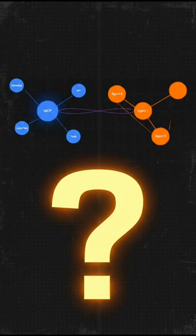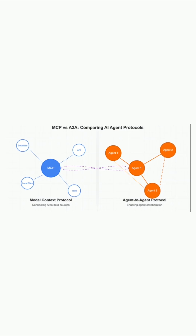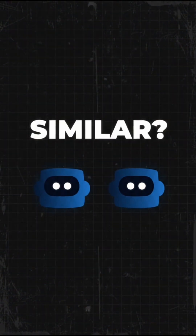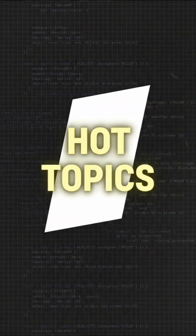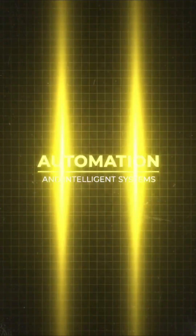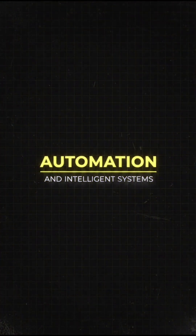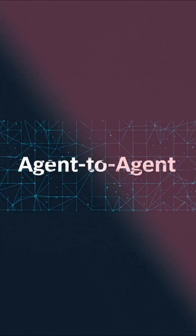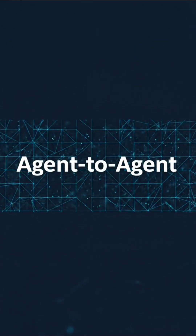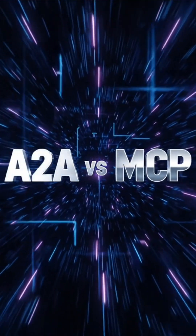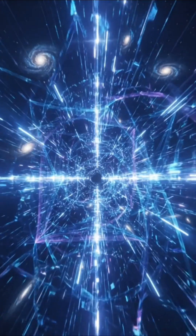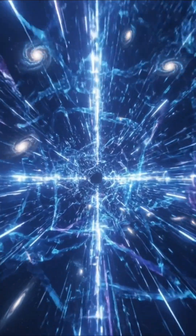Have you noticed how everyone's suddenly talking about agent-to-agent and model-context protocol? They sound similar, right? Both are hot topics in the world of AI automation and intelligence systems, but they actually solve two very different problems. Let's break down agent-to-agent, or A2A, versus model-context protocol, or MCP, and why they matter for the future of enterprise AI.